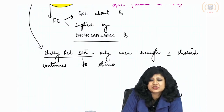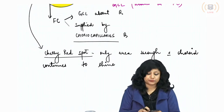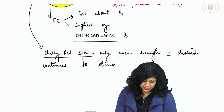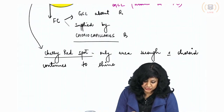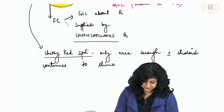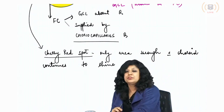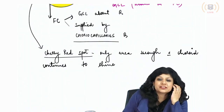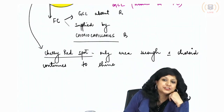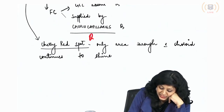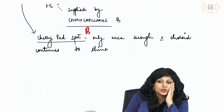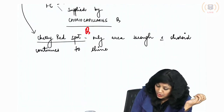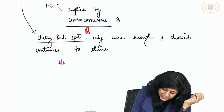The fovea centralis is the only place through which the choroid continues to shine. This spot is called the cherry red spot. It is not pathological — it is actually normal; it is the only area through which the choroid continues to shine.